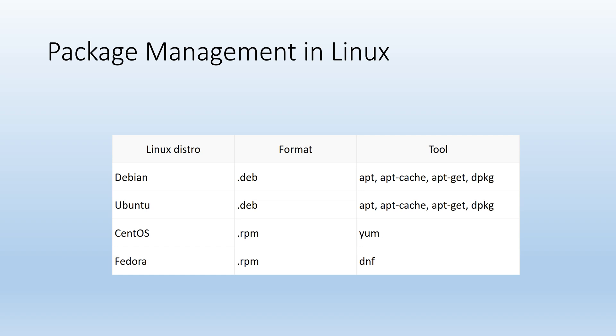Debian and its derivatives such as Ubuntu, Linux Mint, and Raspbian use the .deb format. APT is the most common package operation command, handling library installation, packages and their dependencies, and managing upgrades. The dpkg command is used to install off-the-shelf .deb packages directly from the local file system.